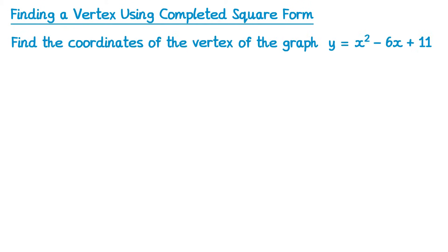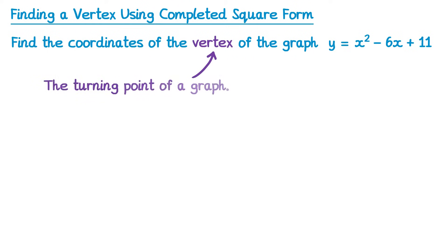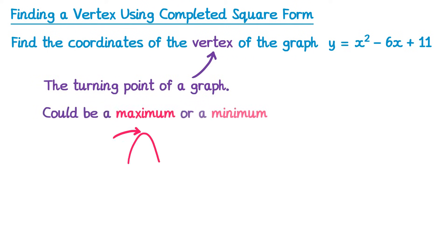Let's begin. We're asked to find the coordinates of the vertex of the graph y equals x squared minus 6x plus 11. A vertex is just another name for the turning point of a graph — the point at which the graph changes direction. This could be a maximum point or it could be a minimum point.